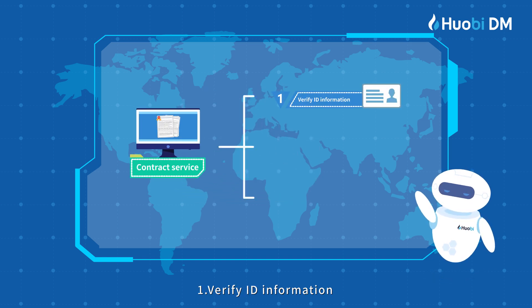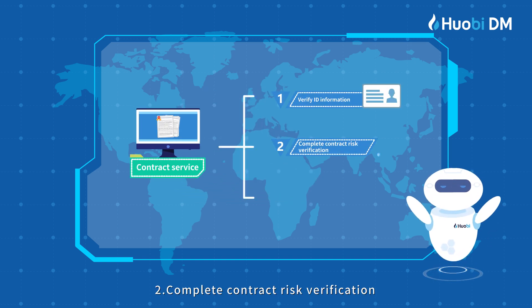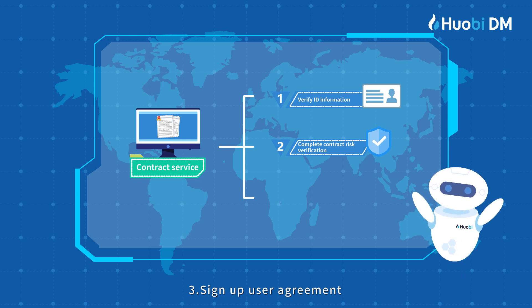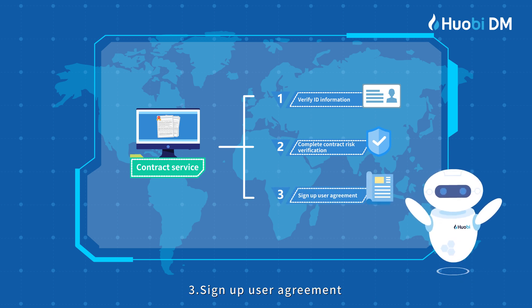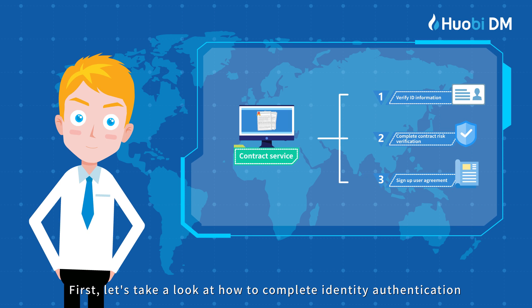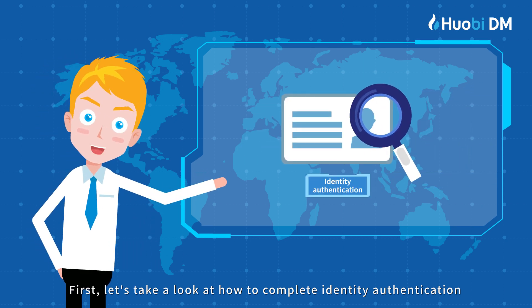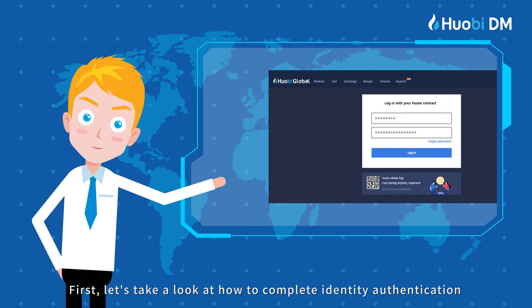Step 1: Verify ID information. Step 2: Complete contract risk verification. Step 3: Sign user agreement. First, let's take a look at how to complete identity authentication.